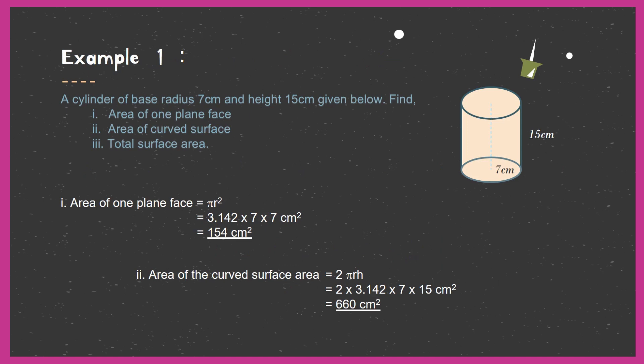Example 1: A cylinder of base radius 7 cm and height 15 cm is given. Find: number 1, the area of one plane face (the circle); the area of the curved surface (the rectangle); and then the total surface area. For one plane face, we use πr². Pi equals 3.142, multiplied by r squared where r equals 7 cm.